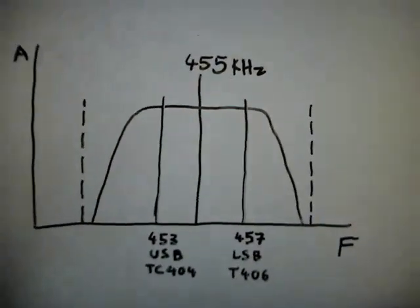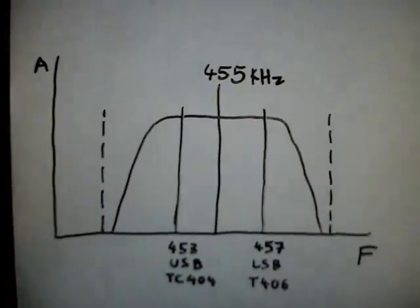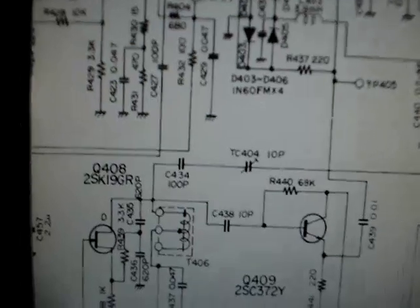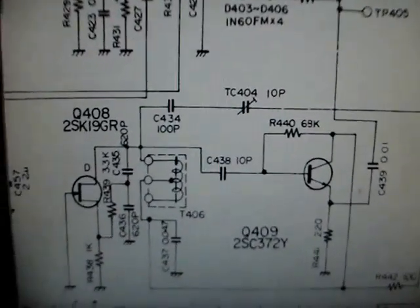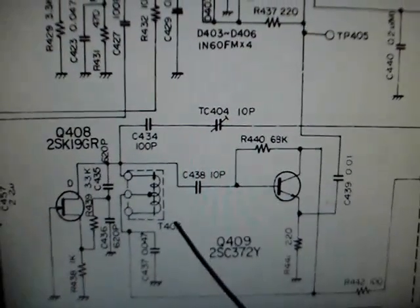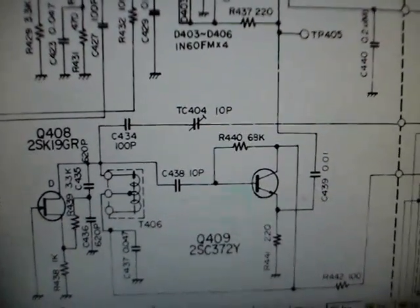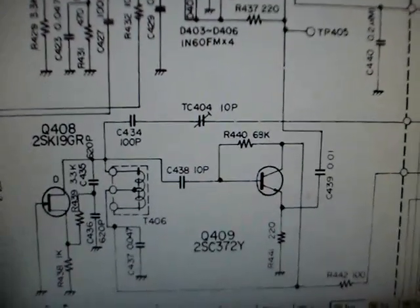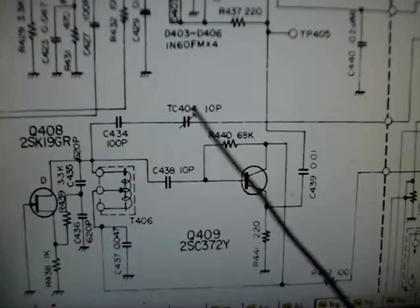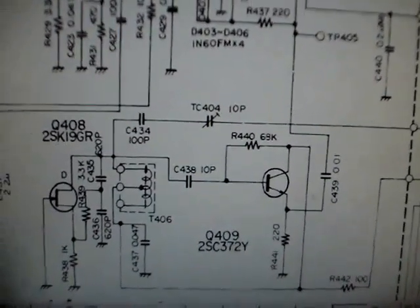So let's see the circuit. Here's the partial circuit of the receiver. We have focused here on the BFO section and the buffer amplifier. This is the T406 which we'll have to adjust for the LSB, and this is the TC404 which we'll have to adjust for the USB. This is for LSB and this is for USB to achieve the single sideband capability.